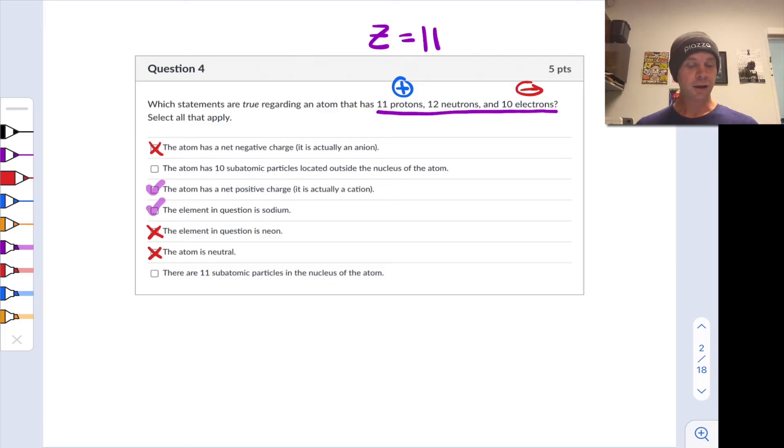The number of subatomic particles inside and outside of the nucleus - let's look first at the protons and neutrons. These are nucleons found in the nucleus of the atom, and there are 23 of them in total, so there are many more than just 11 subatomic particles in the nucleus of this atom.